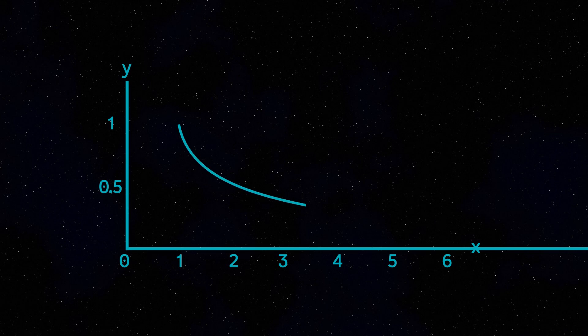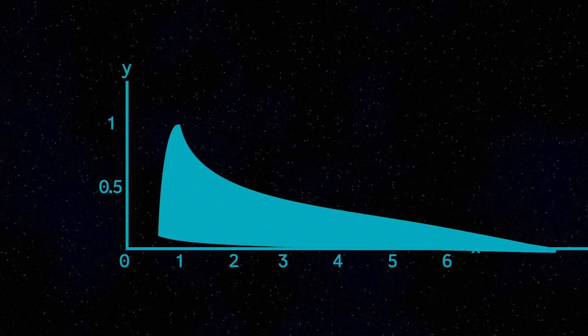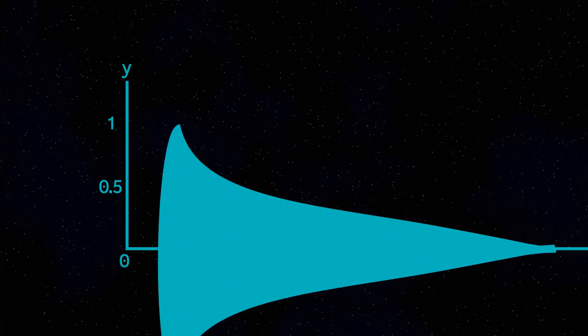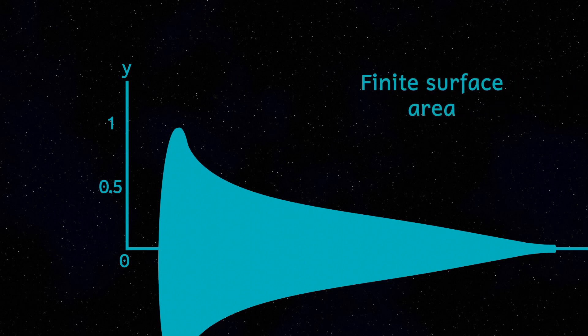If this line ever touches zero on the x-axis, then when I rotated it around the x-axis, it would have a finite surface area. But because that line never, ever touches zero, the tail of this shape, or the pointy bit of the horn, gets thinner and thinner and thinner, but never becomes nothing. Forever.